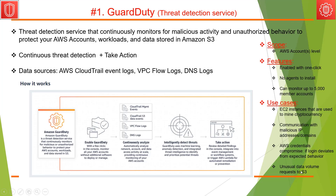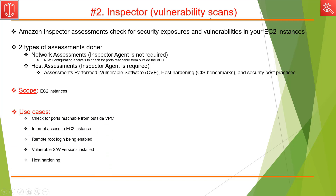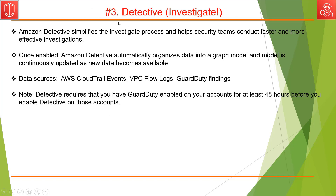The next service is Inspector. At a high level, it does vulnerability scans on EC2 instances. It does two types of assessments: network assessments, which require no agent installation, and host assessments, which require an agent to be installed. The scope of the service is the EC2 instance. Use cases include detecting whether your EC2 instance has internet access or has any vulnerable software installed.